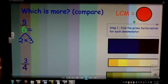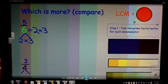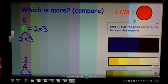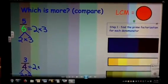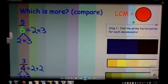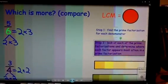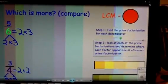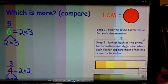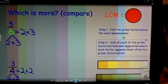So two times three is the prime factorization of six, and the prime factorization of four is two times two. Now, since I have their prime factorization broken down, I need to go to step number two. Step number two says look at each of the prime factorizations and determine where each factor appears most often in the prime factorization.